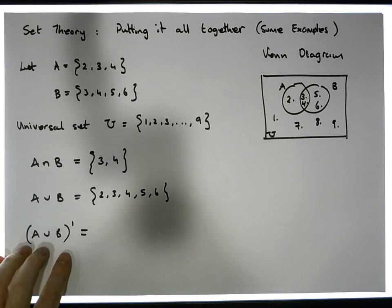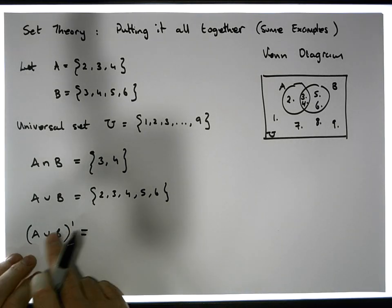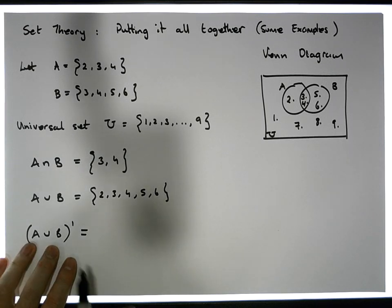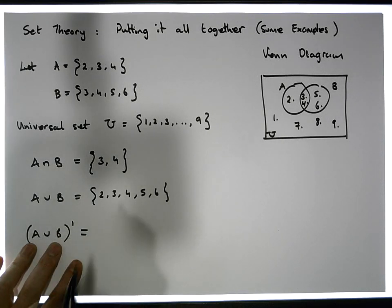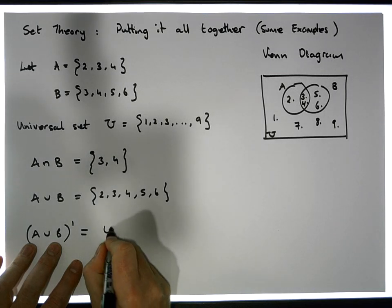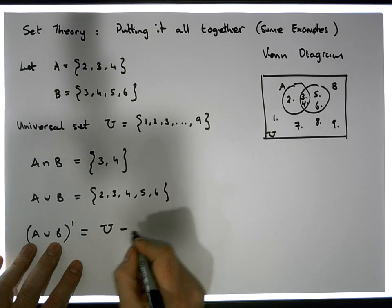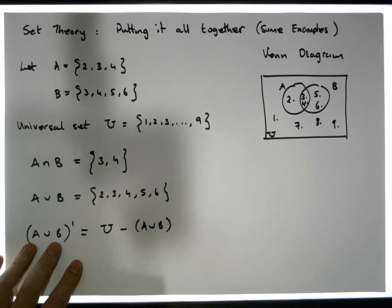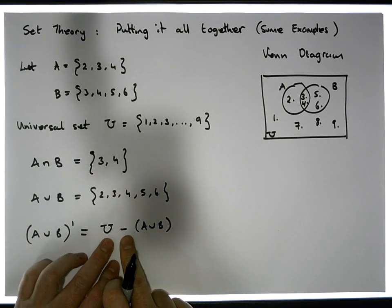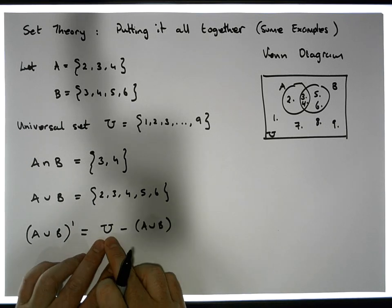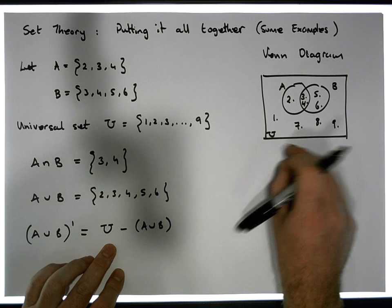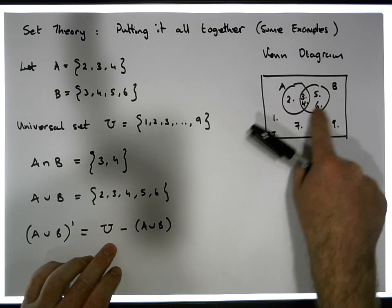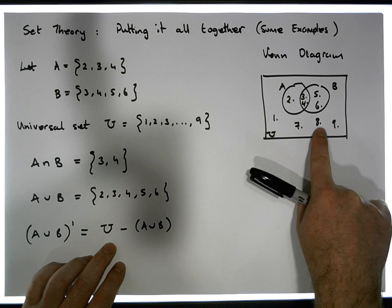What we'd like to define is the complement of A union B. The complement is everything outside of A union B. Another way to write it: the complement of any set is the universe without the set itself — in other words, it's what's left in the universe after we take away A union B. Here's the universe; when we take away A union B — these two sets — what's left behind is 1, 7, 8, and 9.